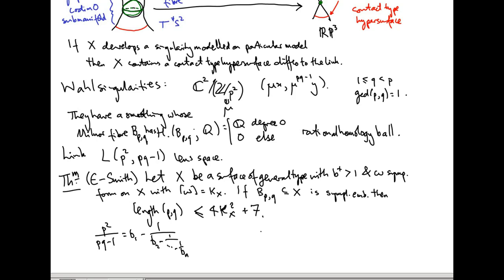This is not quite sharp. In the 1990s, Yong Nam Lee gave the bound that the length is less than 400K_X⁴. At the same time as us, Julie Rana and Giancarlo Urzua showed that in the algebraic world, the length of a Wahl singularity on a stable surface is bounded above by 4K² + 1, and this is sharp. Our proof is symplectic, and gives this nice algebraic corollary.